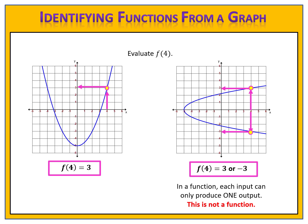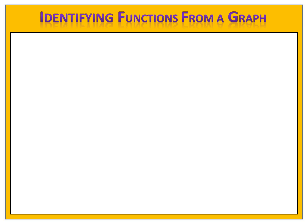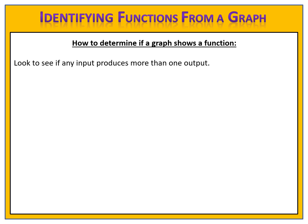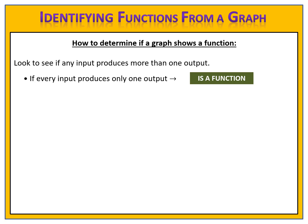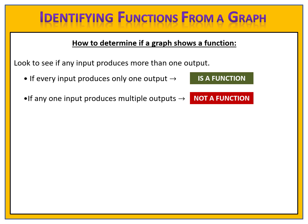Let's take a look at how we can identify functions from a graph. Here are some simple steps to follow. First, look to see if any input produces more than one output. If every input produces only one output, then your graph is a function. If any one input, even a single one, produces more than one output, then your graph is not a function. We can use something called the vertical line test in order to easily determine this.